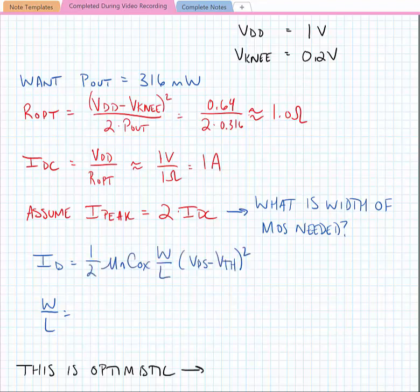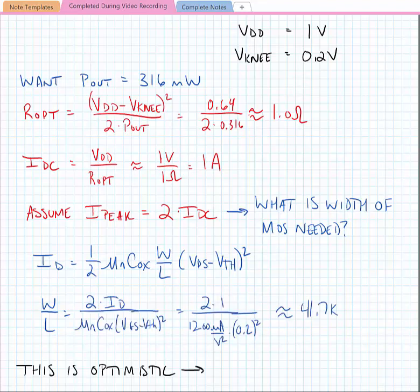From this, we can find the W over L ratio that would be required to handle this current. So we can find that the necessary W over L for the transistor in order to provide the required power with these conditions is about 41,000. This is a very large transistor.